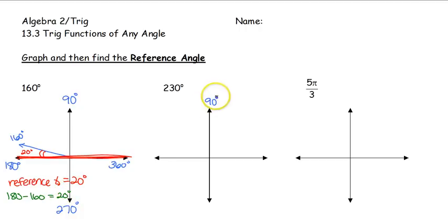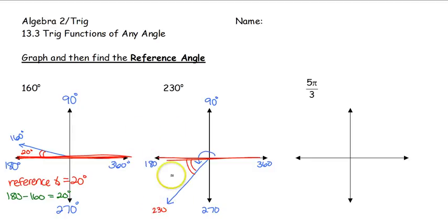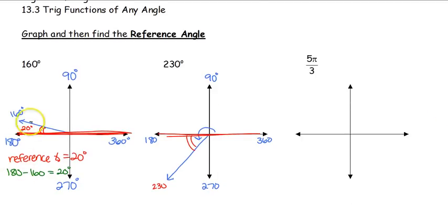Next one, we've got 230 degrees. We know it's going to be between 180 and 270. Halfway is 225, so it's going to be a little bit more than halfway between those two angles — that is the measure of 230 degrees. The reference angle is always going to be with the x-axis and the closest x-axis. How many degrees is it from 180 to 230? We do 230 minus 180, which leaves us with 50 degrees. So our reference angle here is going to be 50 degrees.